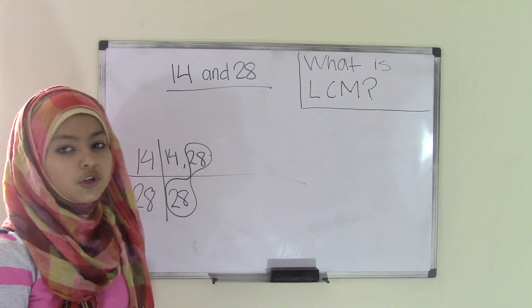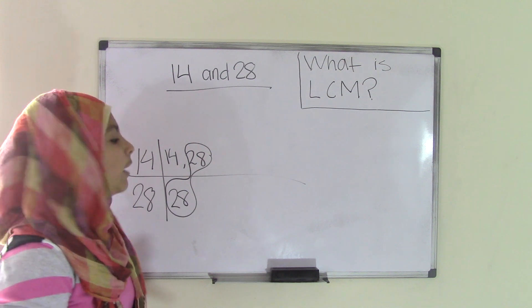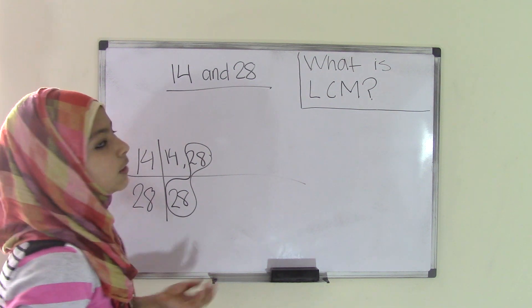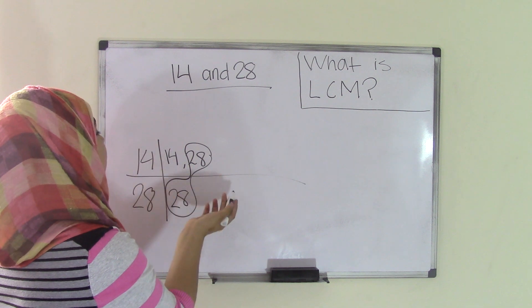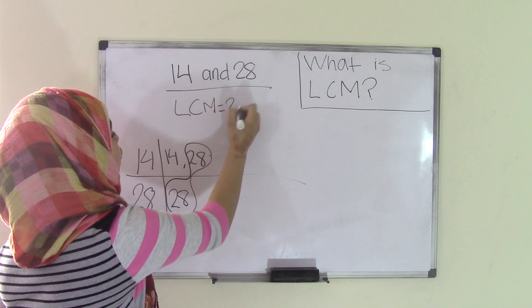So even though these are very large numbers, sometimes you will find the LCM in the first pair of multiples that you list, or sometimes you have to keep on going. But that means for 14 and 28, in our case, the LCM or the least common multiple is 28.